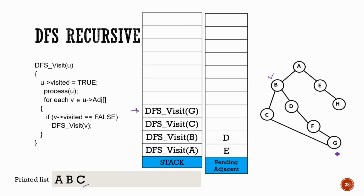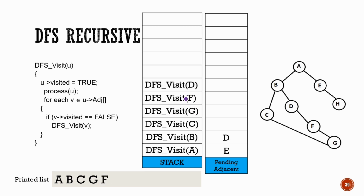There are no more adjacent nodes of C. Similarly, DFS G will call DFS F. G is printed and marked as visited. DFS F will then call DFS D — DFS D is called because it is unvisited. D will be printed.